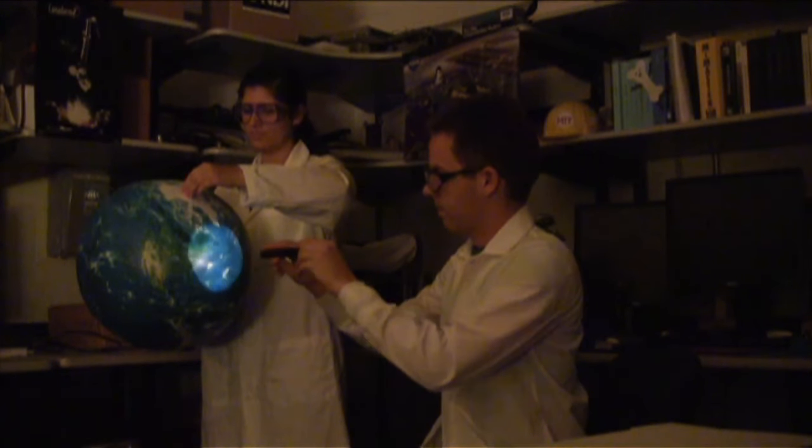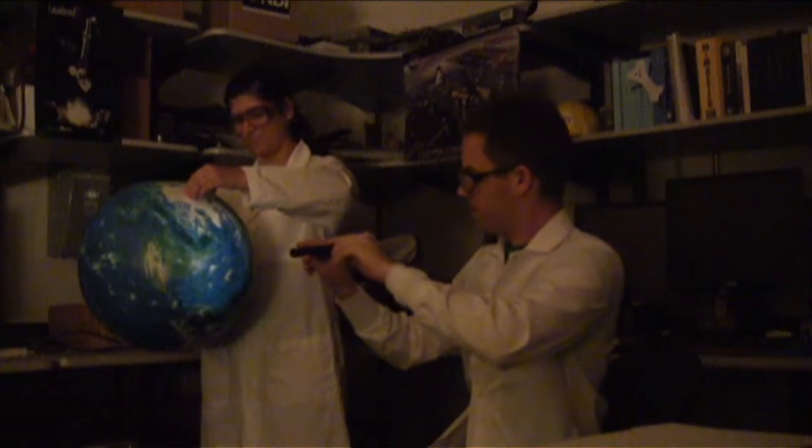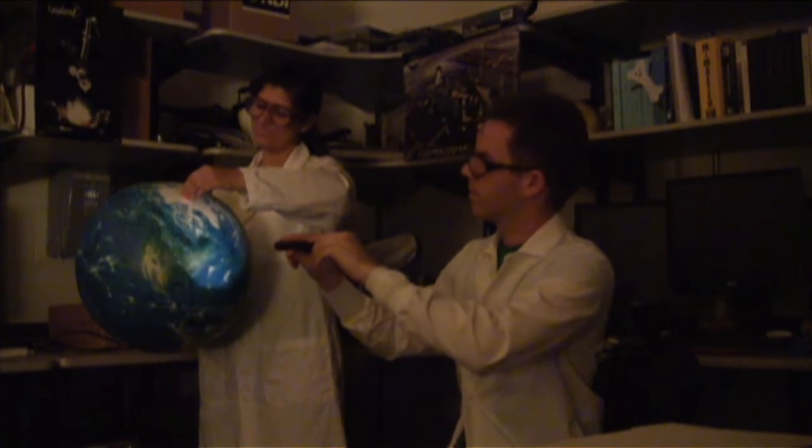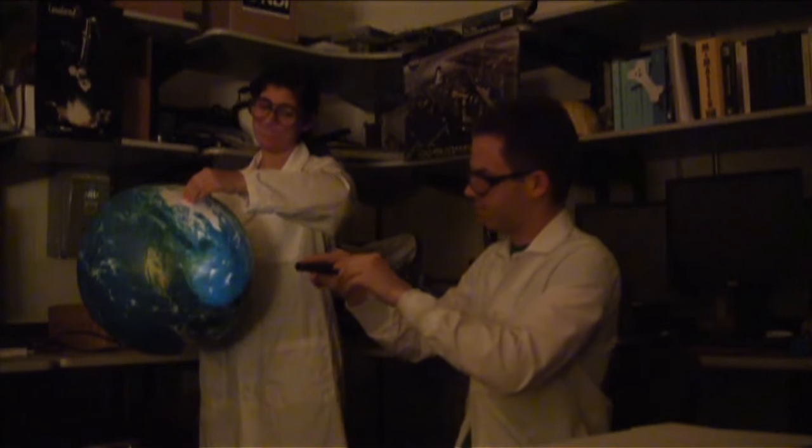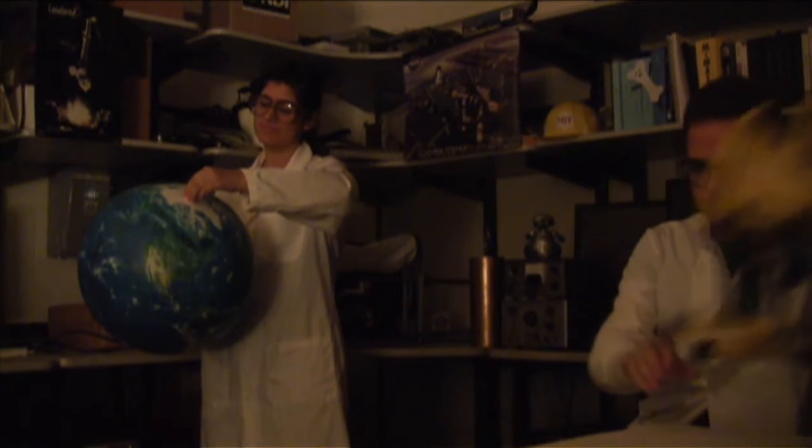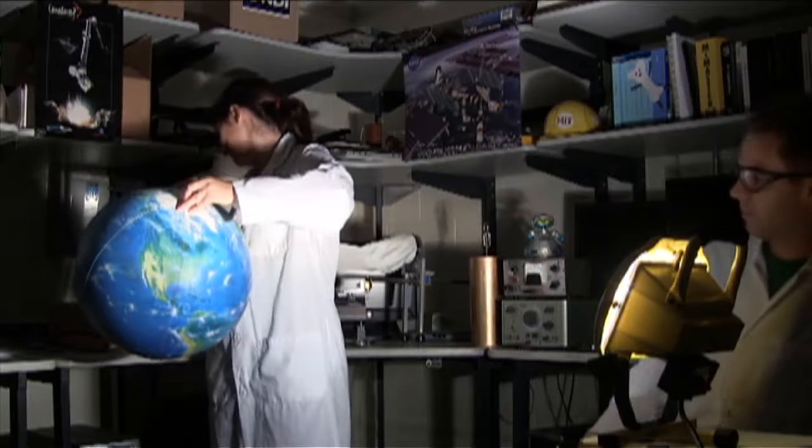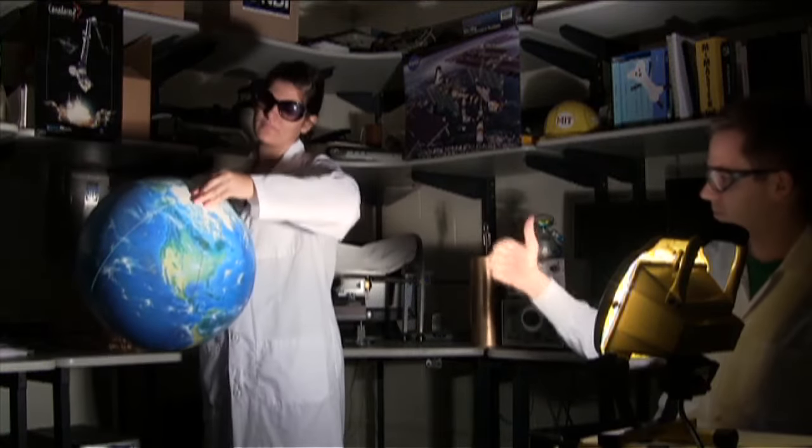Here we have a globe of the Earth, tilted at about 23.5 degrees. And we're using a flashlight to simulate the sun. We're wondering about summer in Norway, so we have the northern hemisphere tilted towards our flashlight sun. Hmm, I don't think that flashlight is powerful enough for this experiment. Yeah, there we go!